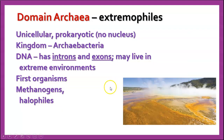Domain Archaea are called extremophiles — the 'phile' part means they really like it, so extremophiles means they like extreme conditions. Most of them are found in places where conditions are too harsh for most other things to live. They are unicellular prokaryotes, meaning they have no nucleus, and do not have other membrane-bound organelles. There is one kingdom in Domain Archaea, called Archaebacteria. Their DNA has both introns and exons, like in eukaryotes, and most of them live in extreme environments — hot springs, hot acidic mud flats, high sulfur content, very high salt content.